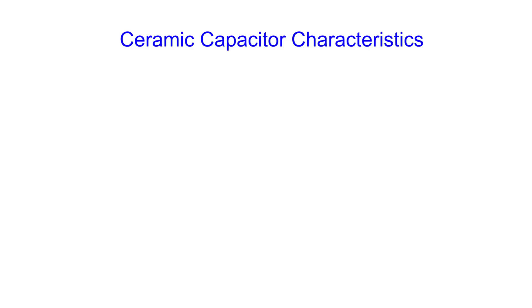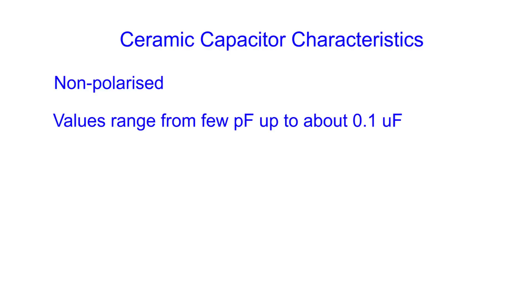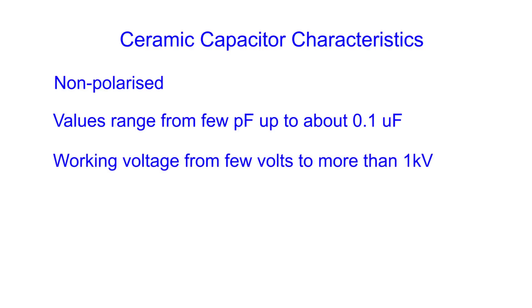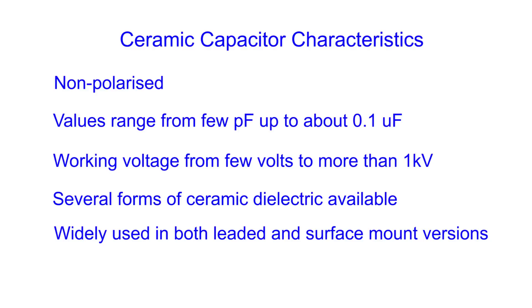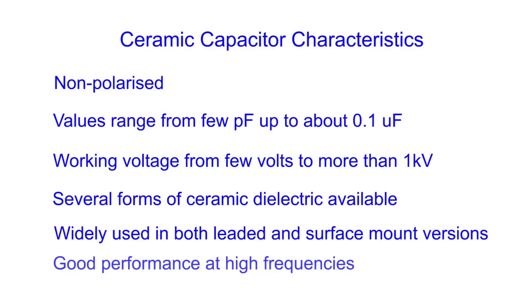To summarise, the main characteristics of the ceramic capacitor include the fact that it is not polarised. The values range from a few picofarads right up to around 0.1 of a microfarad. The working voltage may be low for designs using low voltages, although values of a kilovolt or more are available for high voltage applications. There are several different forms of ceramic dielectric that can be used, varying in their properties — some enabling accurate tolerances to be quoted, whilst others offer high capacitance levels for a given volume. These capacitors are very successful and widely used in leaded and surface mount versions, and also widely used for radio frequency or RF applications, where they're able to provide excellent performance.